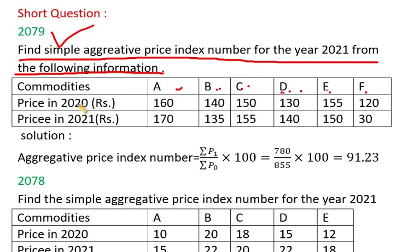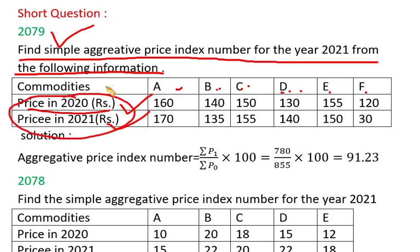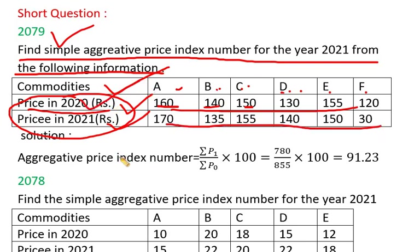The next question involves prices: $20, $40, $50. The prices are given for the year 2020 and for the year 2021.